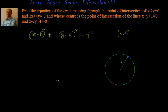Let us look at this example. This example is almost similar to the previous example but only a little bit different. Find the equation of the circle passing through the point of intersection of two lines and whose center is the point of intersection of two other lines. In the first example we had directly the coordinates of h comma k and the radius. Now they are asking us to find out the coordinates of the center and also the point through which it is passing by solving the equations. So we are combining linear equations in two variables with the circle.